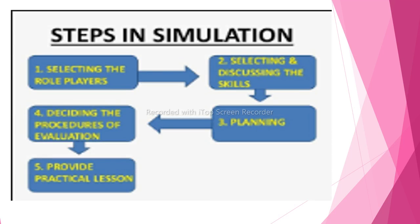Next are the steps in simulation. Step one: selecting the role players — learn the weakness and strength of students. For example, with five students named A, B, C, D, E, you decide their roles. After selecting, you discuss the skills and duties, plan which turn each will take, and decide who will ask the first question.